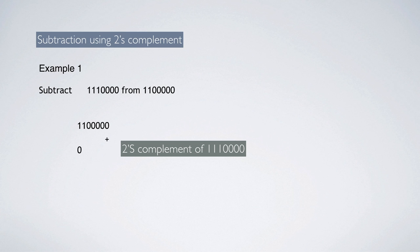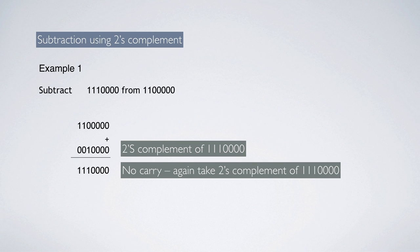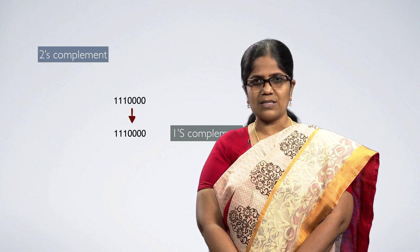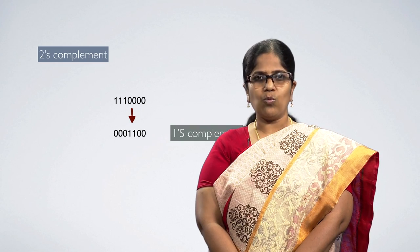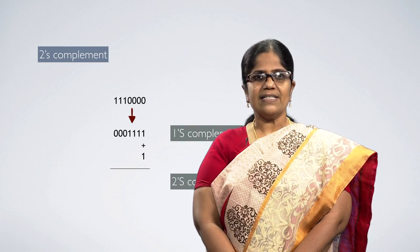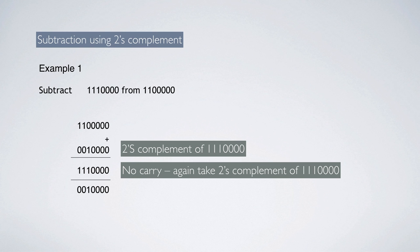Now add 11000000 with 0010000. The result is 11010000. Notice that in the result we do not have any carry. In this case, again find the 2's complement of the result and add a negative sign. To take the 2's complement of 11010000, first take 1's complement which is 00101111 and add 1. The answer is 00110000. Add a negative sign, so the final answer is minus 00110000.